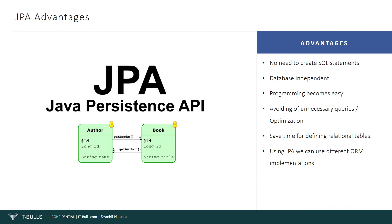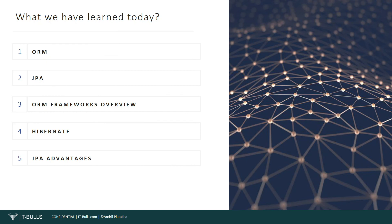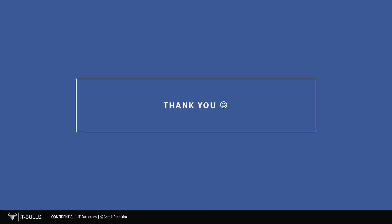That's all I wanted to share with you in this lesson. Let's recap what we have learned today: we learned what ORM is, what JPA is, and we reviewed different ORM frameworks including Hibernate. At the end of the lesson we learned about JPA advantages. That's all for this lesson. Thank you all for your attention. Have a great day and see you in the next lesson.